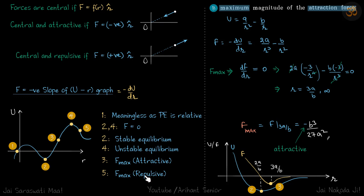Is it attractive or repulsive? We can see from the slope. At three, slope is positive, which means the force is negative. If force is negative, the force is attractive.